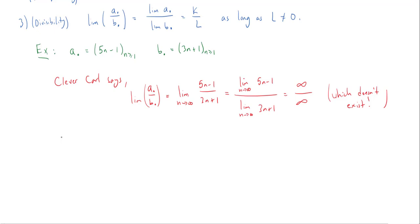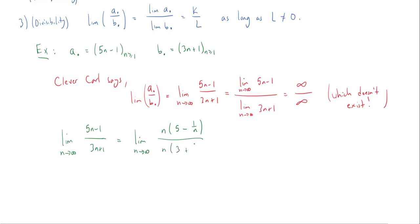To do this properly we use a little algebraic magic. We want the limit as n goes to infinity of (5n minus 1) over (3n plus 1). We factor n out of both numerator and denominator: we get n times (5 minus 1/n) over n times (3 plus 1/n). Since n does not equal zero for n starting at 1, we can cancel the two n's and get the limit as n goes to infinity of (5 minus 1/n) over (3 plus 1/n).